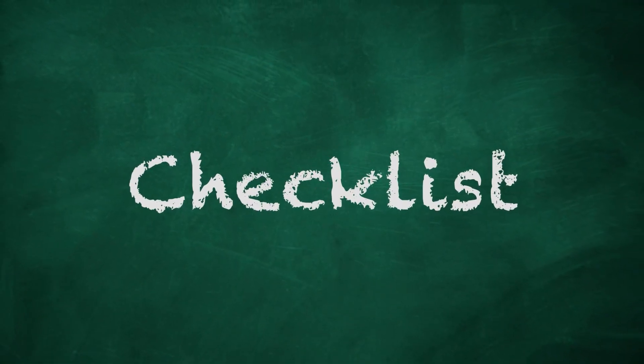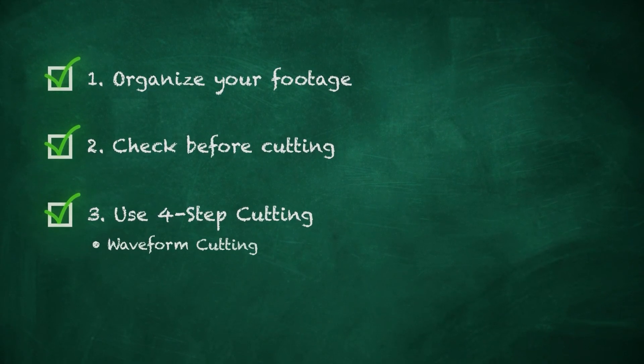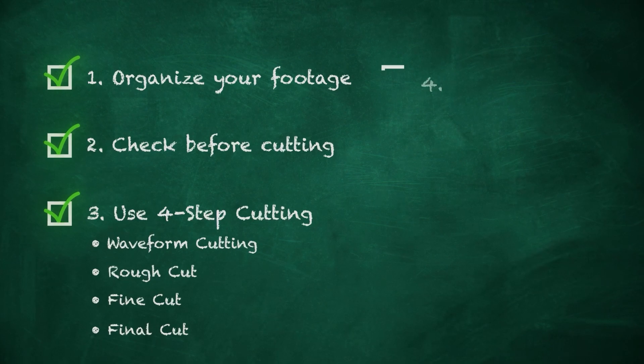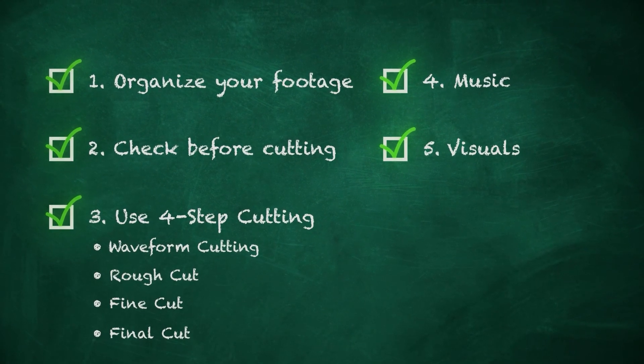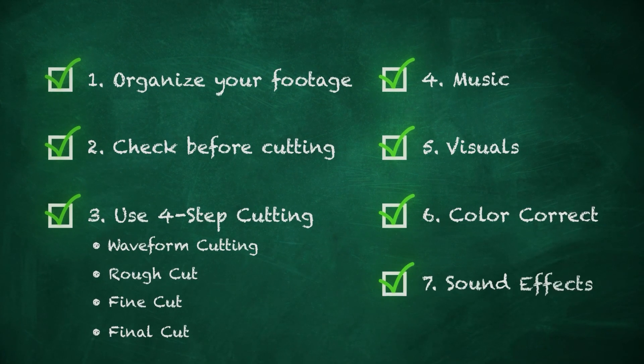That's my workflow. Let me recap everything — I'll put a checklist on screen and you can download it in the description as a Notion document where you go step by step checking off every box. The checklist covers: organize your footage, check everything before cutting, use the four-step cutting — waveform cut, rough cut, fine cut, final cut — then add music, do light and heavy visuals, color correct everything, and finally do the sound effects. This method saved me countless hours, so try it out and let me know how it goes in the comments.